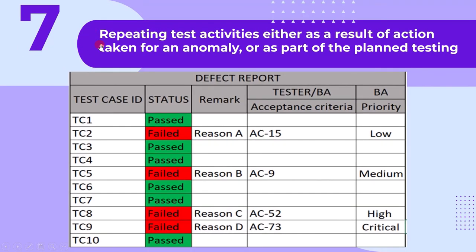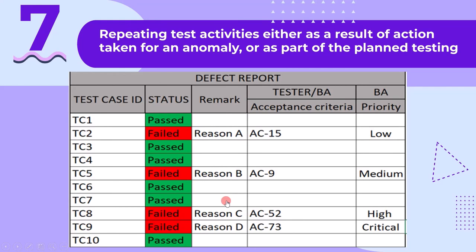The seventh main activity is repeating test activities either as a result of action taken for an anomaly or as part of the planned testing. Based on the defect report or defect analysis, if we think a few tests failed because of a test setup issue, then we may have to update the test setup and re-execute the tests.